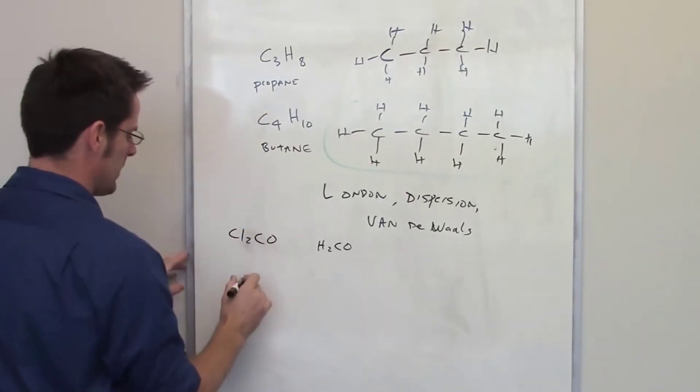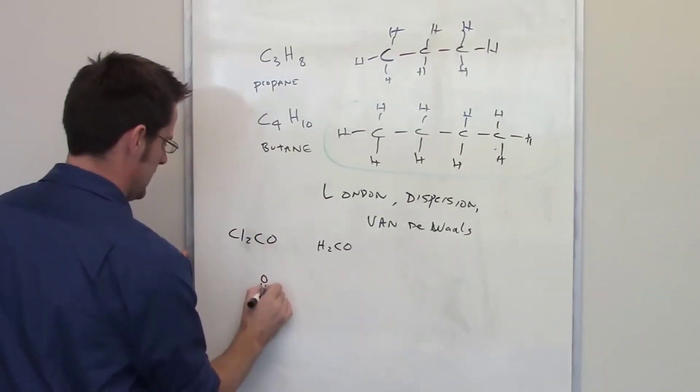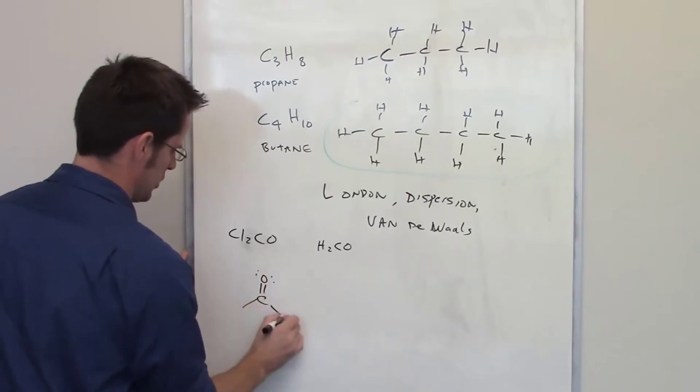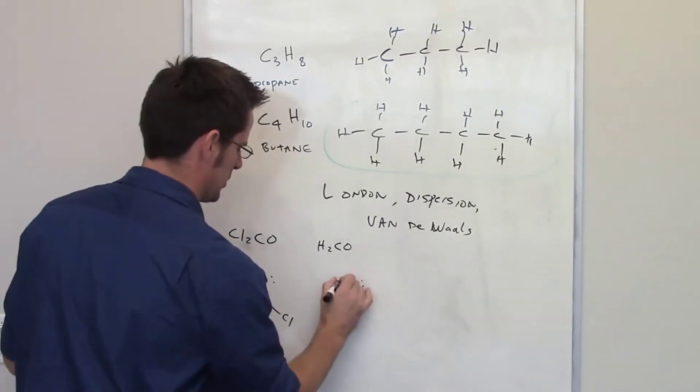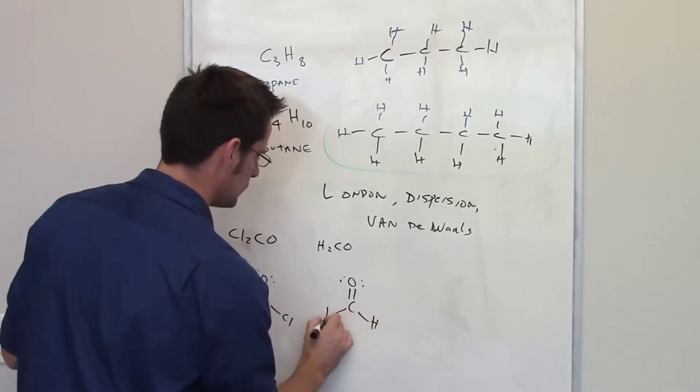If you draw the Lewis structures for these, phosgene has a Lewis structure that looks like this, whereas formaldehyde has a Lewis structure that's the same except it has hydrogens in the place of the chlorine.